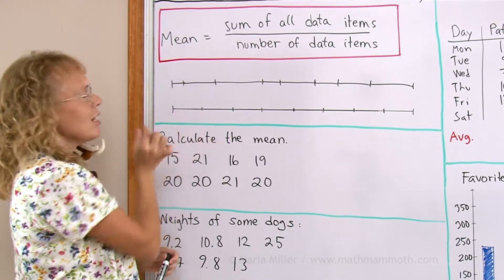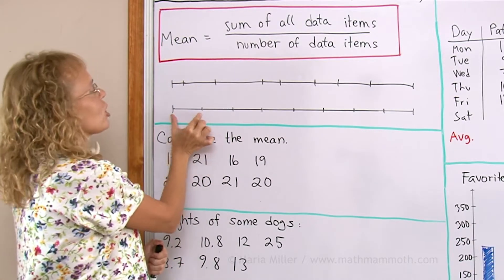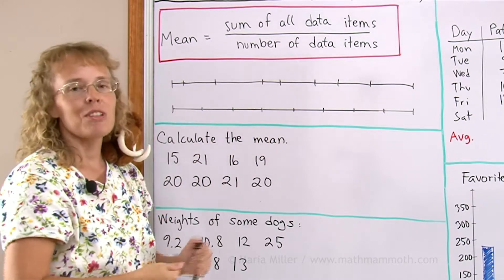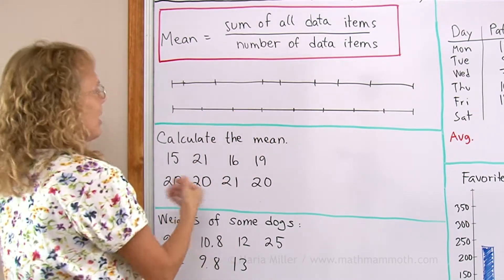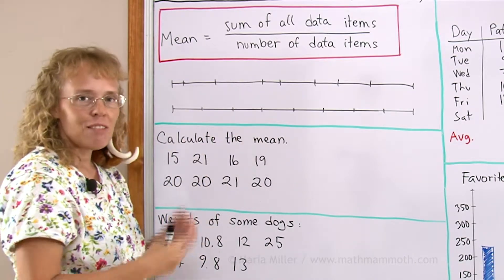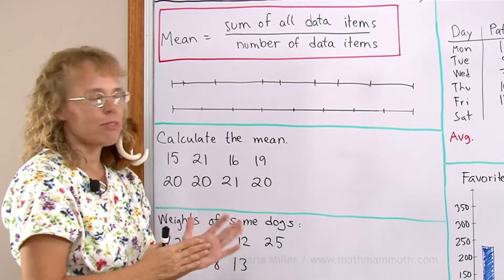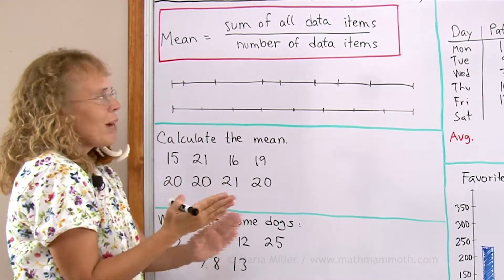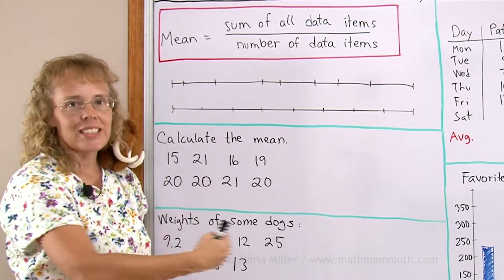If the caterpillar crawled this much each day, then in eight days it would have crawled the same distance as if it had been crawling different distances. So average is like evening it out, finding the balance point of your whole data set.